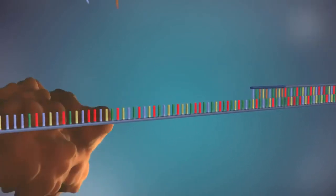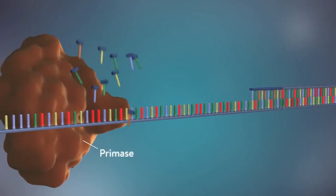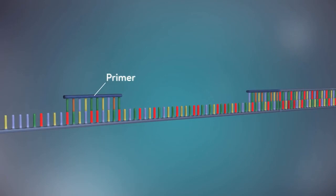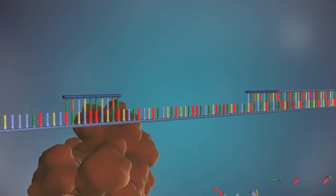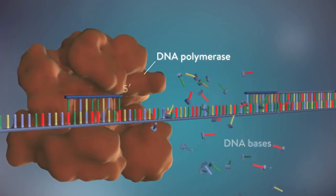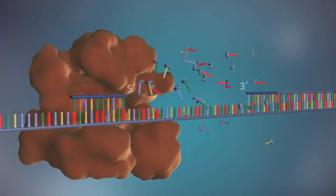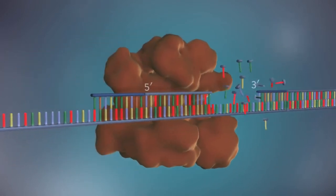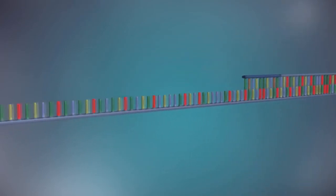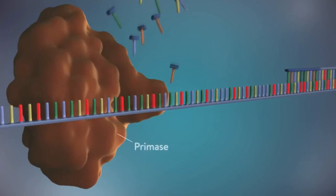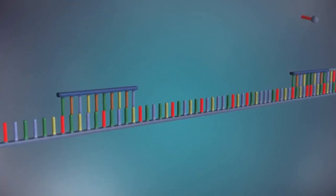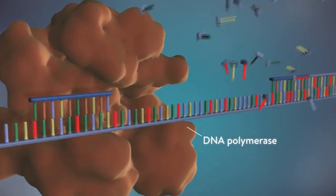Each fragment is started with an RNA primer. DNA polymerase then adds a short stretch of DNA bases in the 5-prime to 3-prime direction. The next primer is then added further down the lagging strand. Other Okazaki fragments are then made and the process is repeated again.